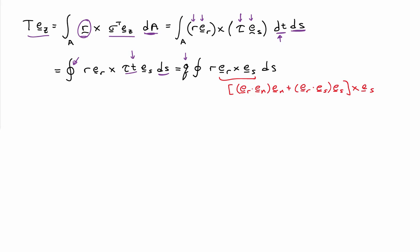I can explicitly compute the integral with respect to thickness because nothing depends on thickness by assumption, giving me a t. The arc length integral is a closed line integral. I have the product t times tau, which I replace with the shear flow q and bring it out from the integral sign since q is constant. Now looking at the cross product term er cross es: I represent er in the en-es basis. When I take the cross product with es, the second term drops out because es cross es is zero, and en cross es gives ez. So I end up with q times the closed line integral of r(er·en) ds, times ez.